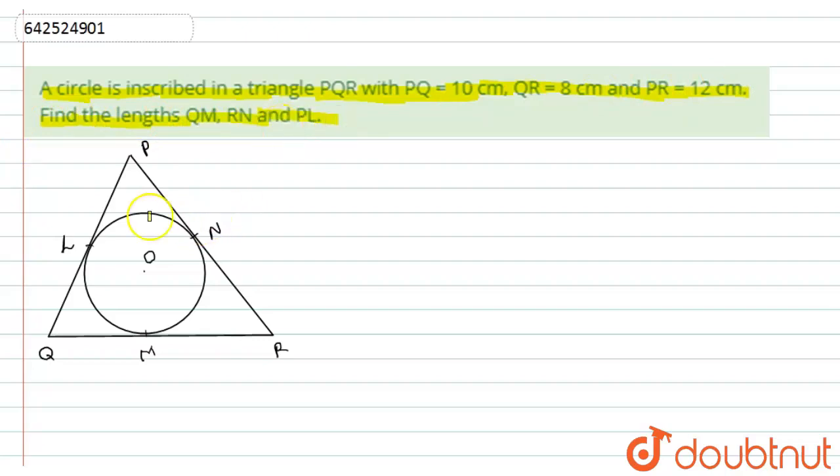If we try to draw the diagram, it will look something like this. Here the PQ we have given as 10 cm, QR is 8 cm and PR is 12 cm.